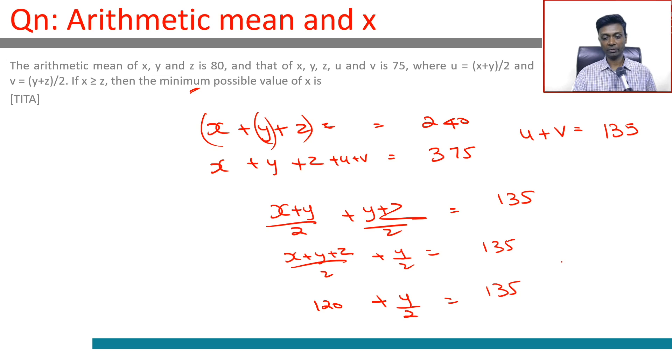So y/2 = 15, therefore y = 30. Since x + y + z = 240, then x + z = 210.